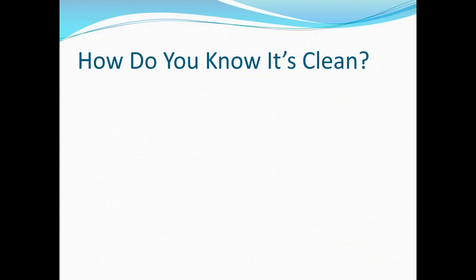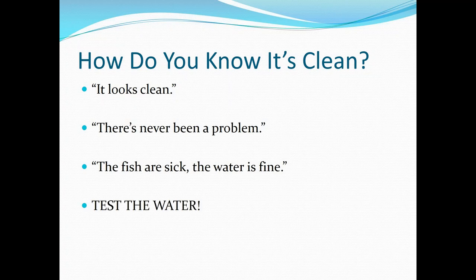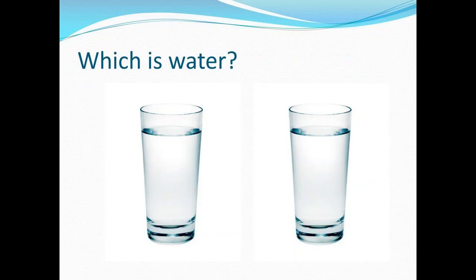So how do you know if your water is clean? It looks clean? There's never been a problem? The fish are sick but the water is fine? Well, these might be great excuses, but the only way to know that your water is clean and safe for fish is to test the water. You might have two glasses that both appear to be nice clean water — however, one could have a pH of around 4 and be very toxic to fish, and the other could have a dissolved oxygen content of zero, which is not compatible with fish life.